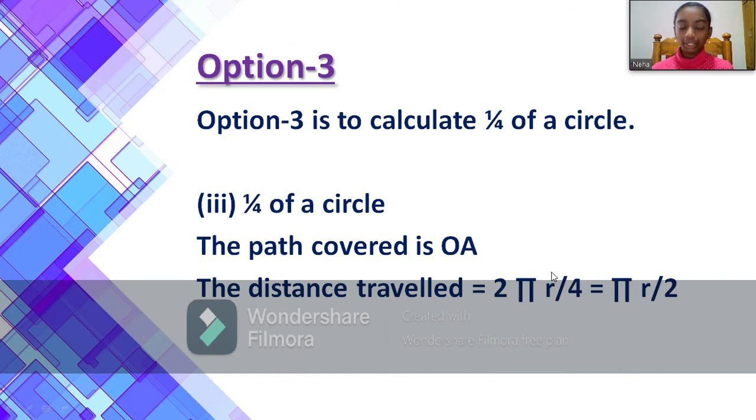And for option 3, option 3 is to calculate 1/4 of a circle, and we use a formula for that which is 2πr by 4, which equals πr by 2.